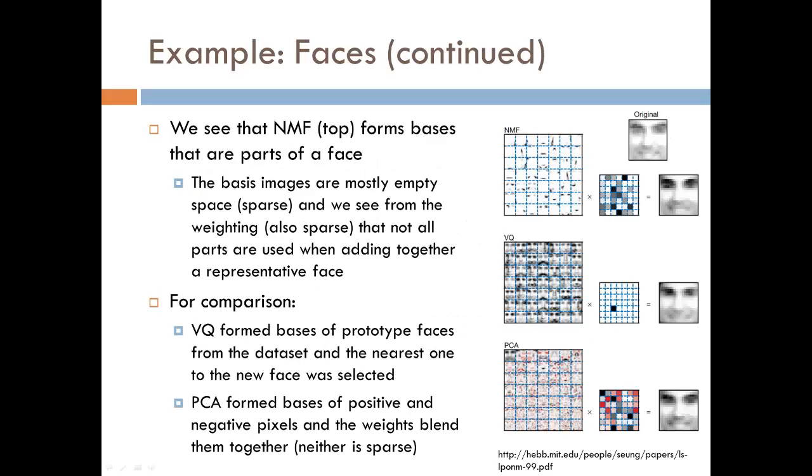We compare NMF to VQ and PCA by giving them the same database to train on, and then presenting them with a new face. The results are shown on the right here, starting with NMF at the top, VQ in the middle, and PCA at the bottom. So the new face is here, and the bases for each method are arranged into 7 by 7 grids here, here, and here. The weights for each basis are arranged in 7 by 7 grids here, here, and here. And the result in a representation of the original face here, here, and here.